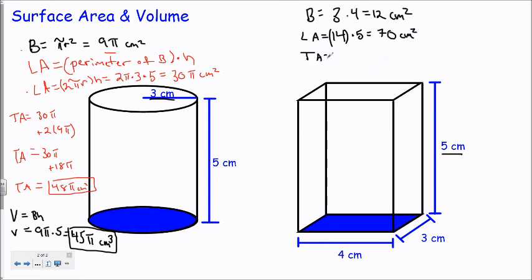My total area will then be that lateral area, plus 2 times the base area. So in this case, that will be 70 plus 2 times 12, which is 70 plus 24, or 94 square centimeters.